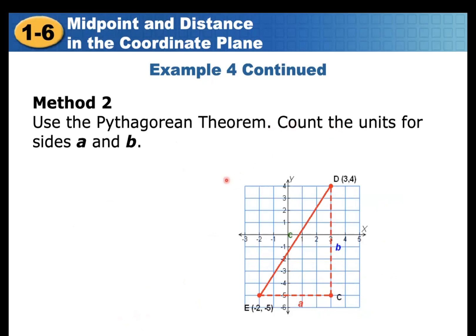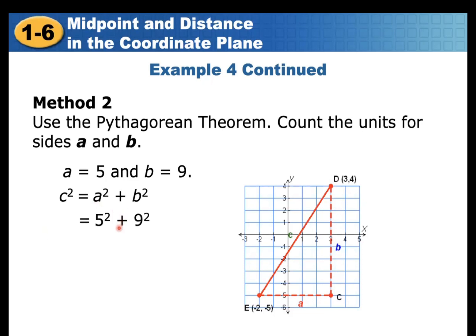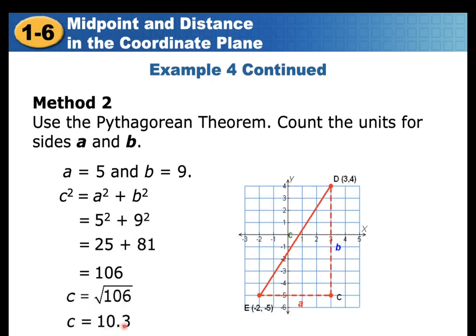Using the Pythagorean theorem, count the units for sides A and B on the graph. A is 5 units and B is 9 units. So C² = 5² + 9² = 25 + 81 = 106, and C = √106 ≈ 10.3. The answer is the same using either the distance formula or the Pythagorean theorem.